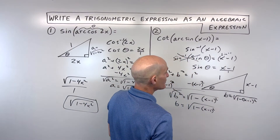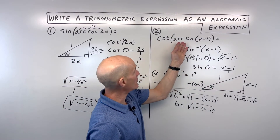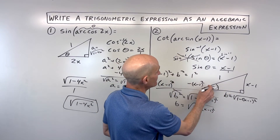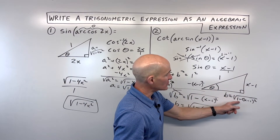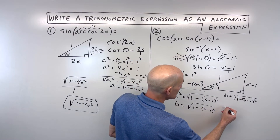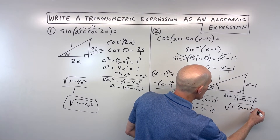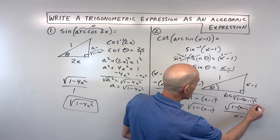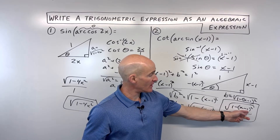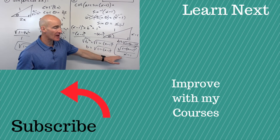Now we're going to say: what's the cotangent of this angle? Because remember, the arcsine was actually solving for the angle — that's theta right here. What's the cotangent of this angle? We know tangent is opposite over adjacent, so cotangent is adjacent over opposite. So this is going to be the square root of 1 minus the quantity x minus 1 squared, all over x minus 1. You can simplify this a little further if you wanted to foil out x minus 1 times x minus 1 and subtract, but I'm going to stop right there.